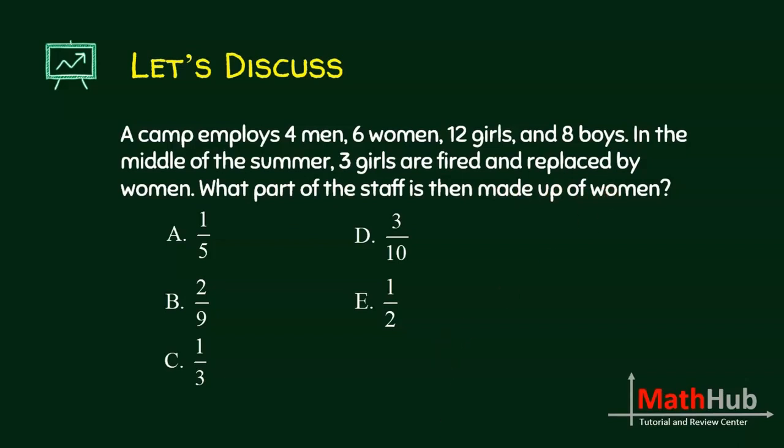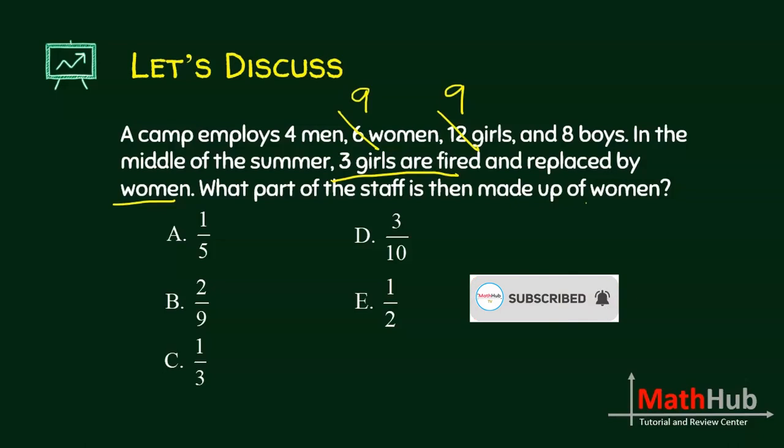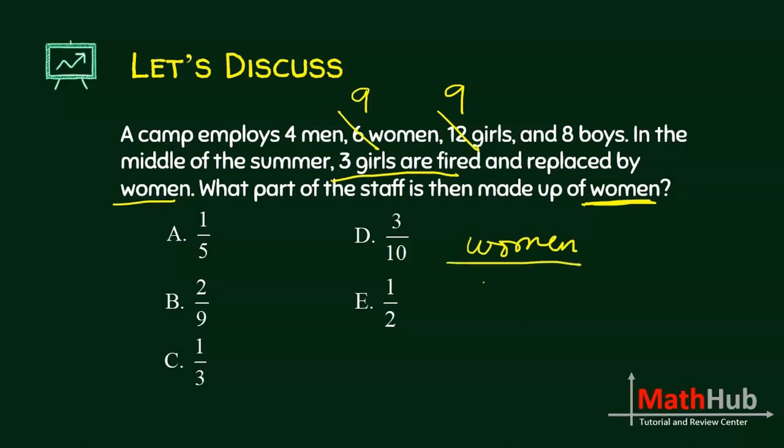This means that 3 girls are fired. So that means we now have 9 girls and they are replaced by women. So we add 3 more women. So this is now 9. What part of the staff is made up of women? So we want the total number of women over the total number of staff.